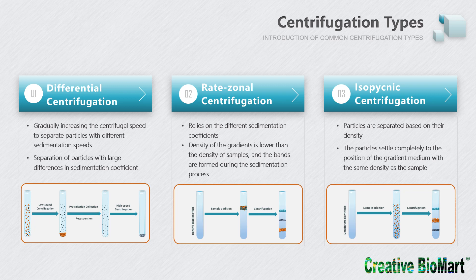Isopycnic centrifugation separates particles by differences in their density, and often uses cesium chloride as the gradient for self-formed gradients. The sample is mixed with the gradient solution, and under centrifugal force, particles with low density float up and high-density particles settle down, until all particles move to the position in the gradient matching their own density. Particles form several bands at different positions according to density differences. Isopycnic centrifugation is independent of the shape or size of sample particles, but closely related to their density. The maximum density of the gradient is greater than that of the samples, so samples will not precipitate to the bottom even after a long centrifugation time. It is often used to separate particles with similar molecular weight but different densities, such as nucleic acids and organelles.